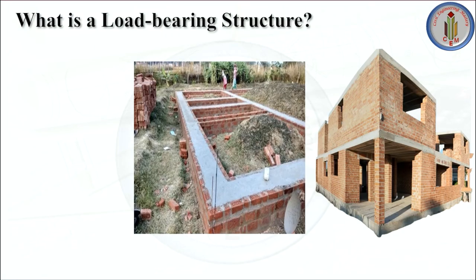Let me tell you about what is a load bearing structure. It is the oldest and most common type of structure. It is the structure in which the loads of the roof as well as lateral loads such as earthquake and wind are borne by the walls. That means walls are the major load carrying element in a load bearing structure.